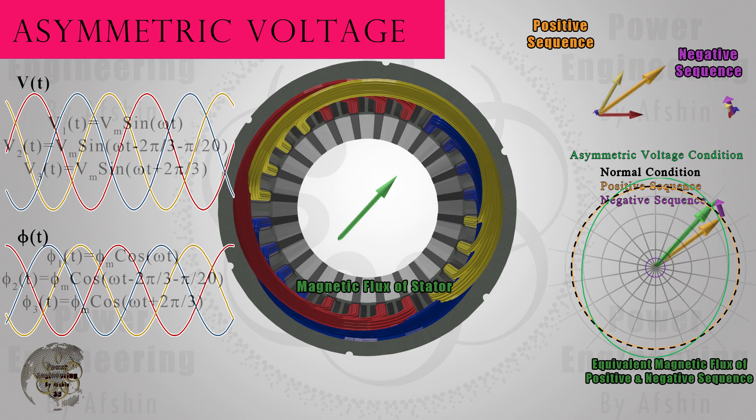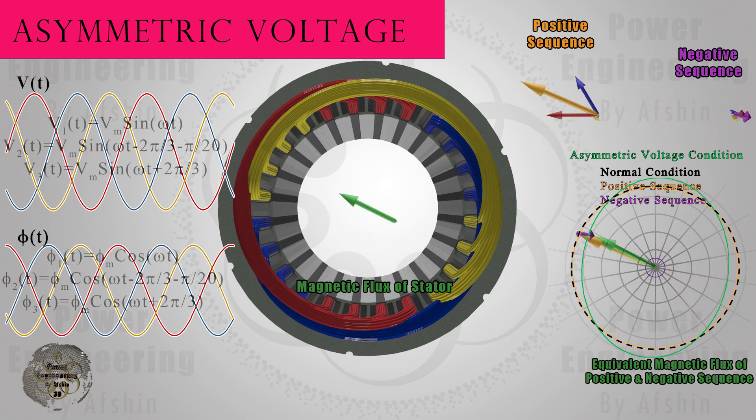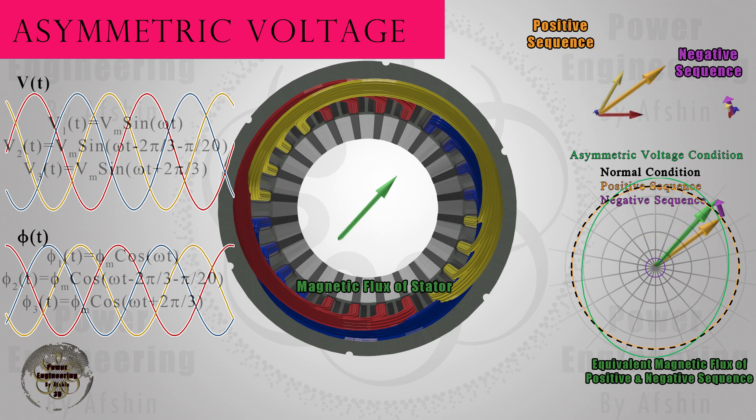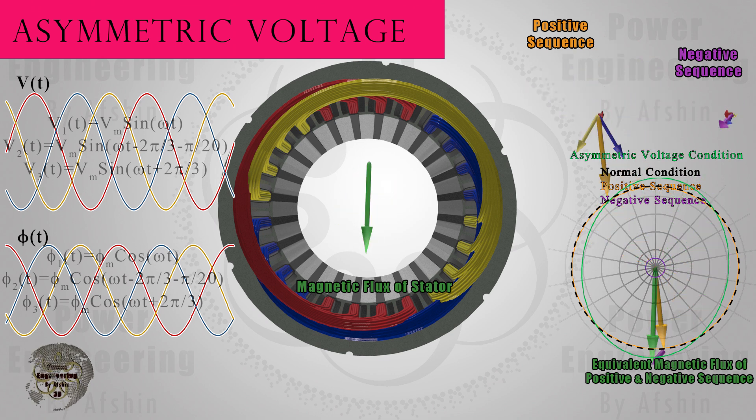It is clear that the negative sequence causes the rotating field to be non-uniform. It affects both its magnitude and phase. You can observe that for moments, the magnetic flux vector falls behind the positive component vector and then compensates for the lag. It is at this moment that breaking torque is generated, leading to a decrease in motor efficiency and an increase in heat and losses.